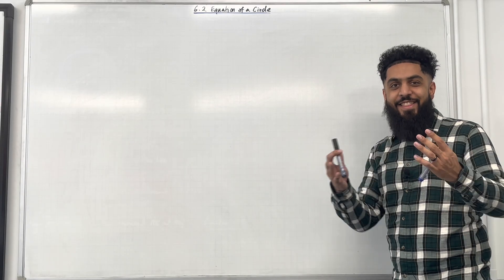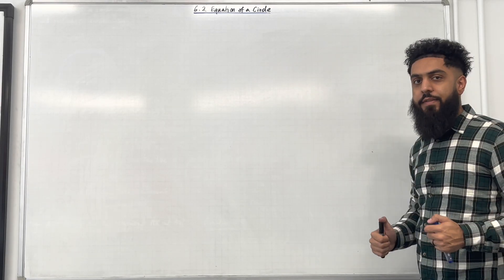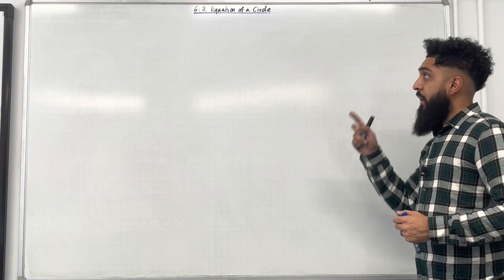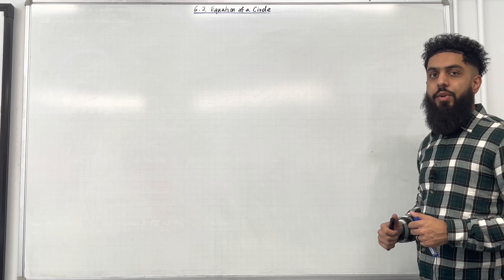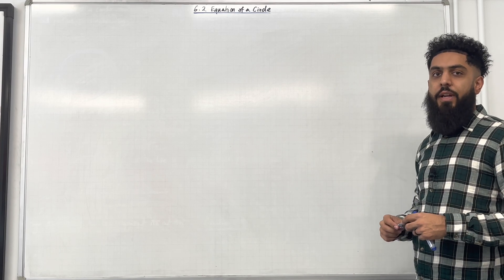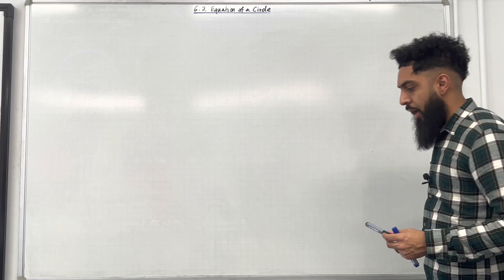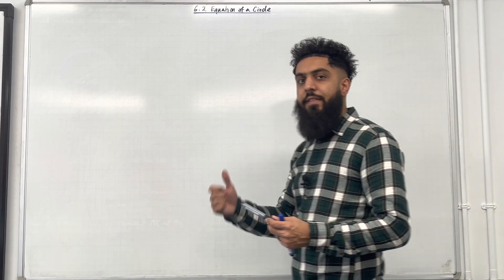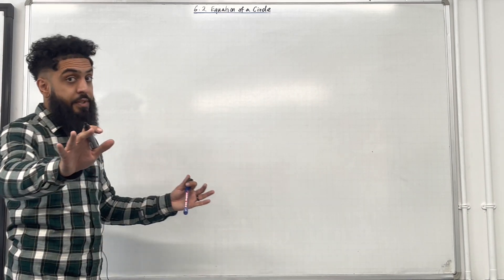Welcome back. In this teaching video I'll be looking at 6.2 equation of a circle. 6.2 represents chapter 6, section 2 of the Pearson A-level Maths, Pure Maths Year 1 textbook. Let's go through the key facts of this section.